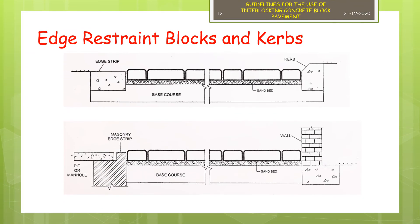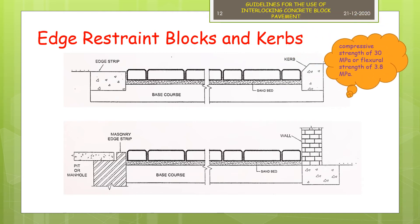Concrete blocks on trafficked pavement tend to move sideways and forward due to braking and improper driving of vehicles. Special edge blocks are required to be placed on both sides of the pavement to prevent the tendency of the blocks to move sideways. The edge blocks are to be made of concrete of high strength to withstand the traffic wheel loading without getting damaged. These members should have at least a 28-day compressive strength of 30 MPa or a flexural strength of 3.8 MPa.